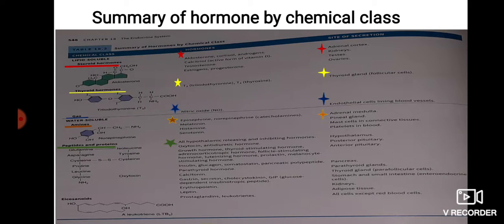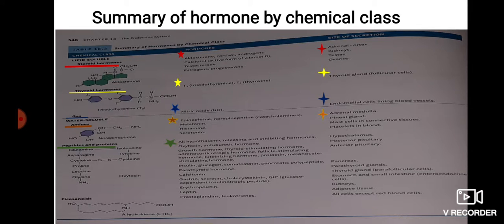Hormones secreted by the pancreas include insulin, glucagon, somatostatin, and pancreatic polypeptide — these are also peptide hormones. The parathyroid hormone is secreted by the parathyroid gland. Calcitonin is a peptide hormone secreted by the parafollicular cells of the thyroid gland.